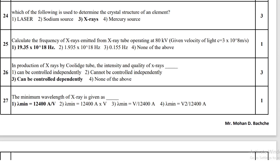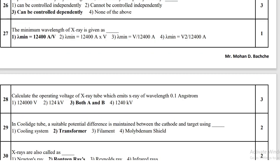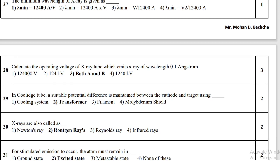In the production of x-rays by a Coolidge tube, the intensity and quality of x-rays can be controlled independently. The minimum wavelength of x-rays is given by lambda minimum = 12400 / V angstrom.